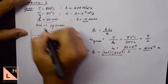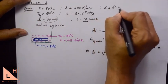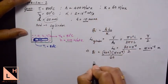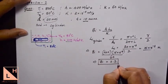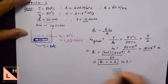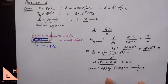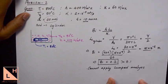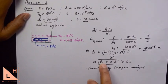The characteristic length for a cylinder is given by volume of cylinder divided by surface area of cylinder. The value of k is also given in the question. When we calculate the Biot number, we get 0.2, which is obviously greater than 0.1. Hence we cannot apply lumped analysis.